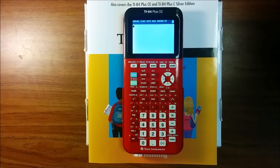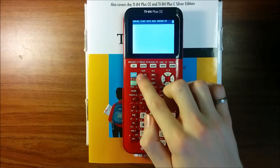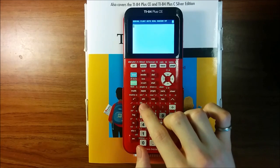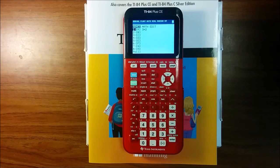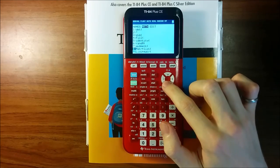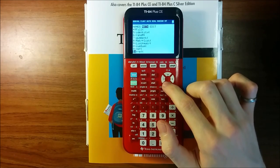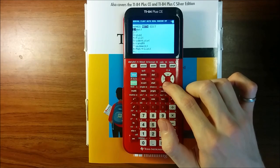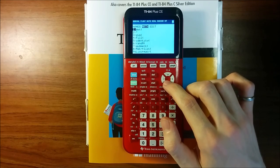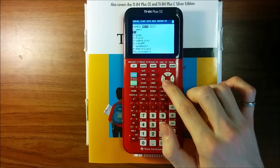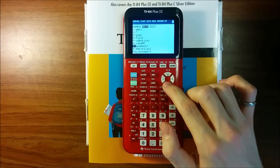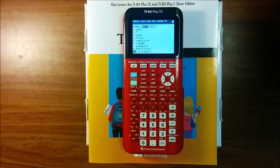Finally, just like with lists, you can do math on matrices. To find these operations, press second and x to the negative one to once again go into the matrix menu, arrow over to the math tab, and you can see different operations for working with matrices. For example, at the top is determinant, the next one is transpose, and there are many other options for manipulating matrices.